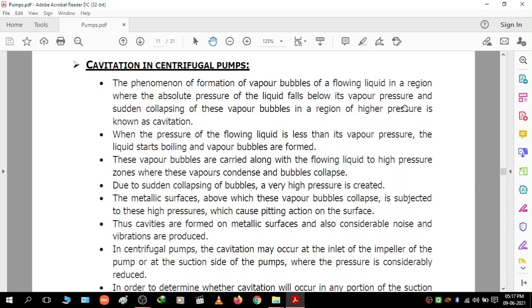The sudden collapsing of these vapor bubbles in a region of higher pressure is known as cavitation. These bubbles are carried along with the flowing liquid to high pressure zones where the vapors are condensed and bubbles collapse suddenly. Due to sudden collapsing of bubbles, very high pressure is created. The metallic surface on which these vapor bubbles collapse is subjected to these high pressures causing pitting action. Thus cavities are formed on metallic surfaces and unbearable noise and vibrations are produced, leading to efficiency loss.